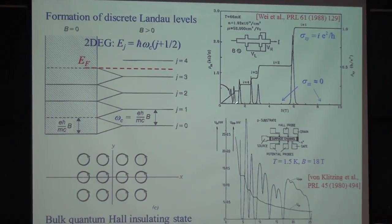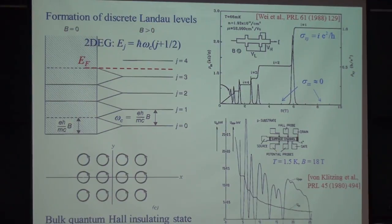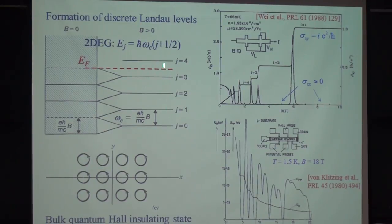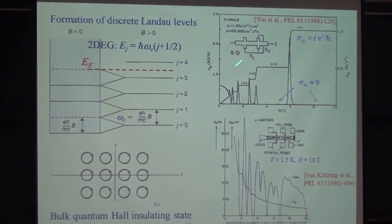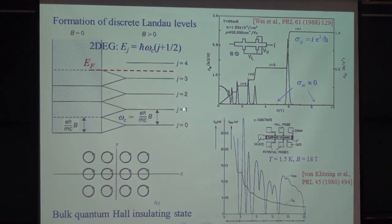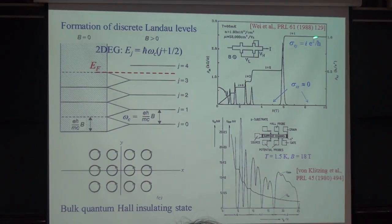As you increase the magnetic field, the gap is proportional to the magnetic field, and the Landau levels will move up across the Fermi level. The amazing thing is that each plateau corresponds to the number of Landau levels below the Fermi level. As you increase the magnetic field, the Landau levels below the Fermi level become fewer and fewer, so we move from j equal to some number down to j equal to zero.